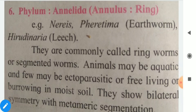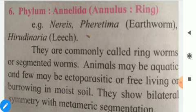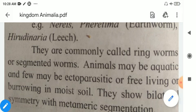What is Annelida? Anulus means ring. Examples are Nereis, Pheretima — that is called as Earthworm — Hirudinaria, which is also called as Leech.